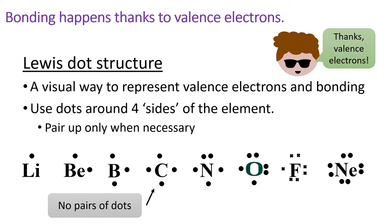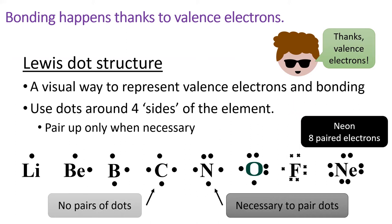For example, carbon has four valence electrons, so we draw four dots on four sides of carbon's symbol. Nitrogen has one extra valence electron, and because we can't draw an unpaired electron anywhere, we have to pair this electron up with another electron around nitrogen. Each additional valence electron is added to form a pair, meaning that when we get to neon, neon has eight valence electrons distributed amongst four pairs.